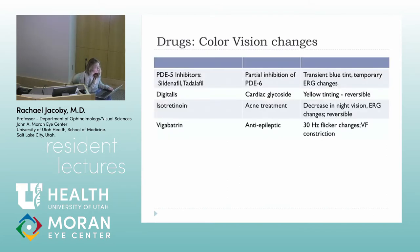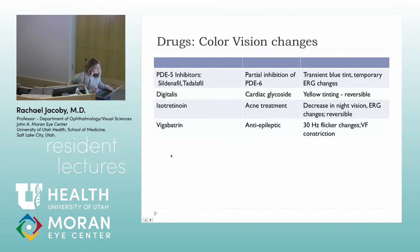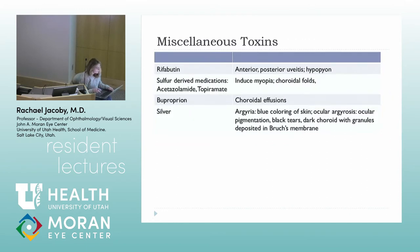Some medications cause abnormalities with color vision. The classic ones are sildenafil and tadalafil, causing transient blue tinting of vision and some temporary ERG changes. Digitalis causes yellow tinting of vision. Isotretinoin can cause a drop in night vision with reversible ERG changes. Vigabatrin can cause abnormalities with visual field and 30 Hz flicker changes.